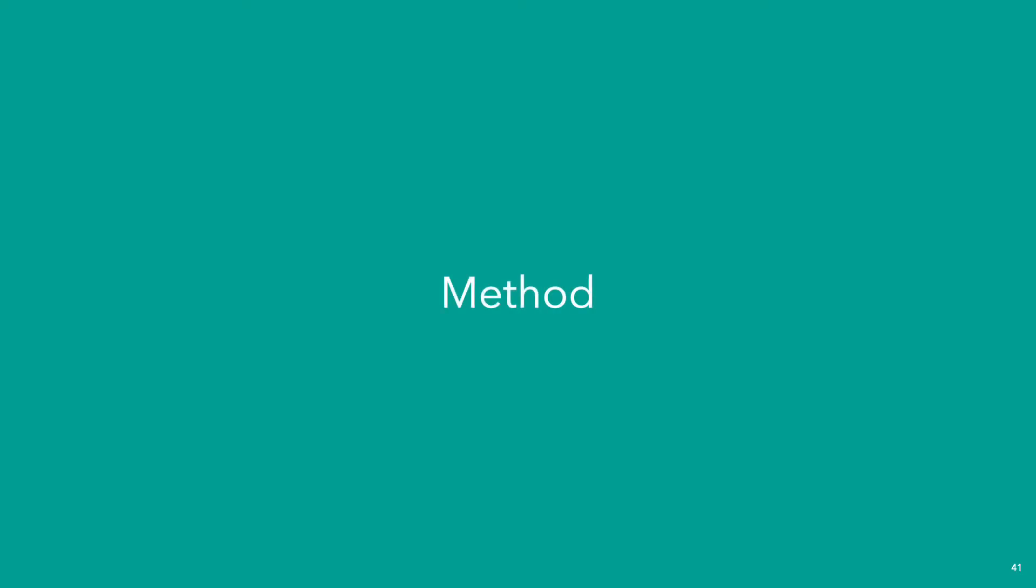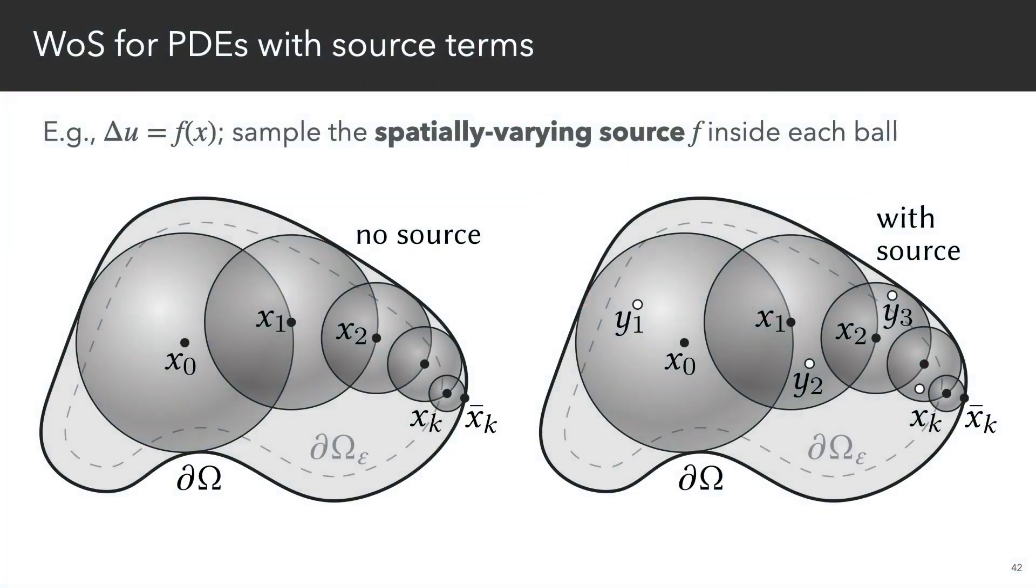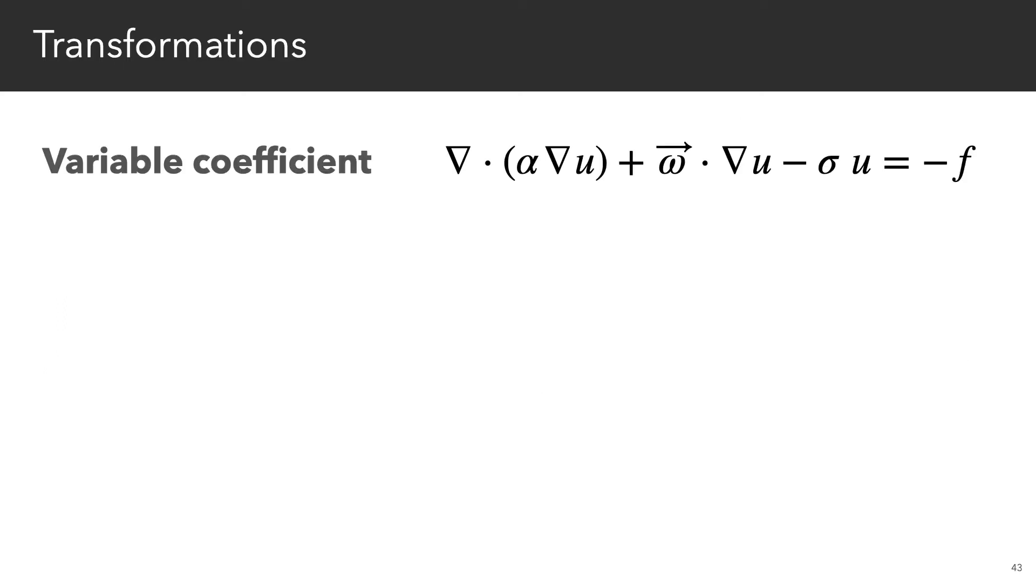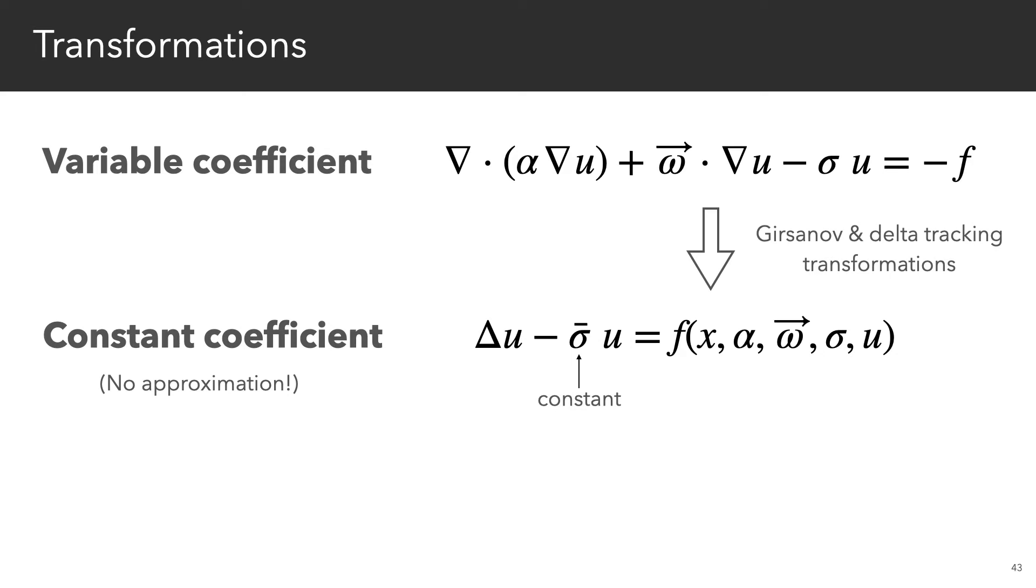So the key observation behind our method is that even though walk-on spheres cannot directly handle PDEs with variable coefficients, it can still be used to solve problems with spatially varying source terms. We therefore apply a series of transformations that convert our original heterogeneous PDE into a constant coefficient screen Poisson equation with a recursive source term.